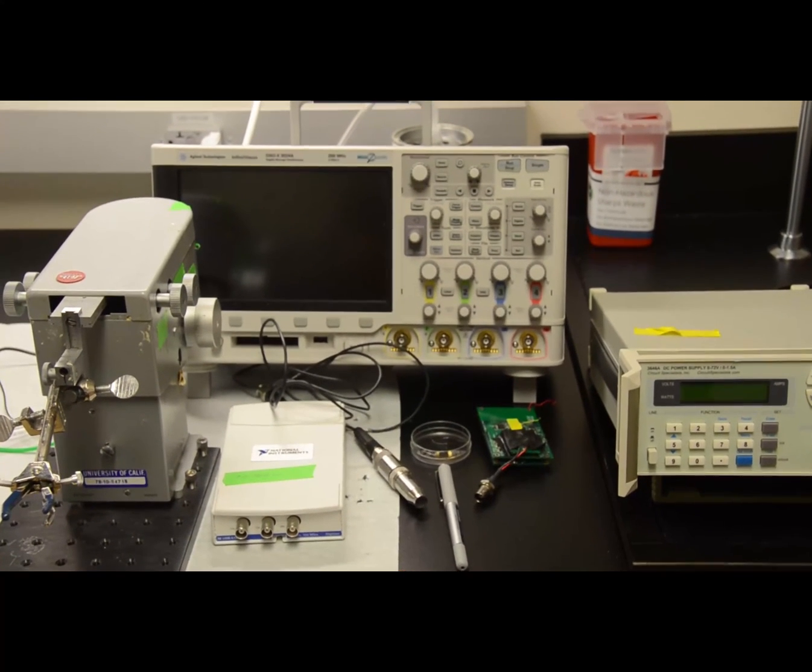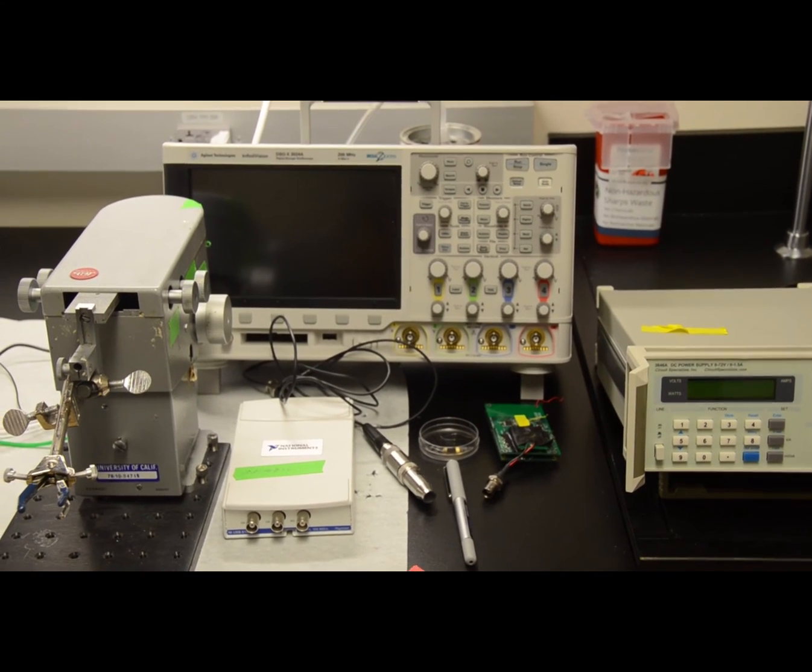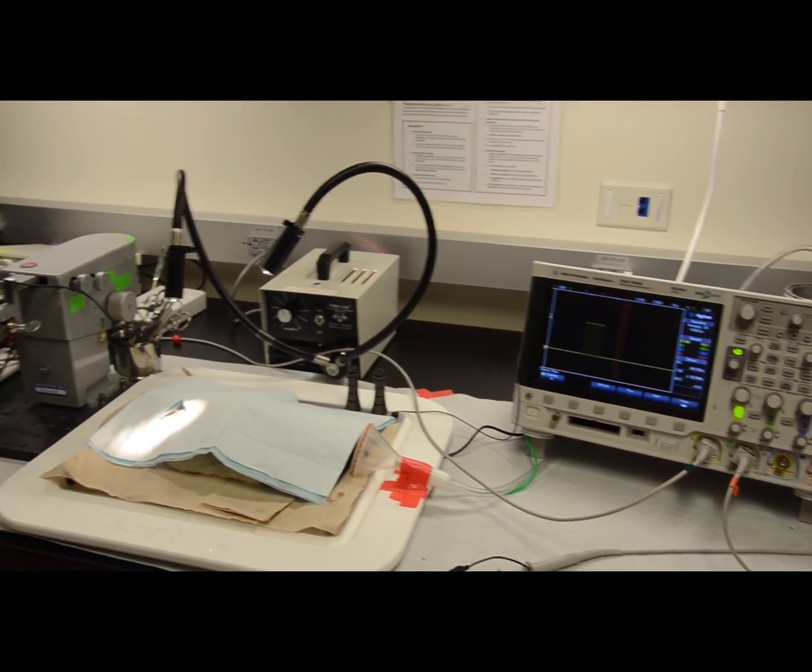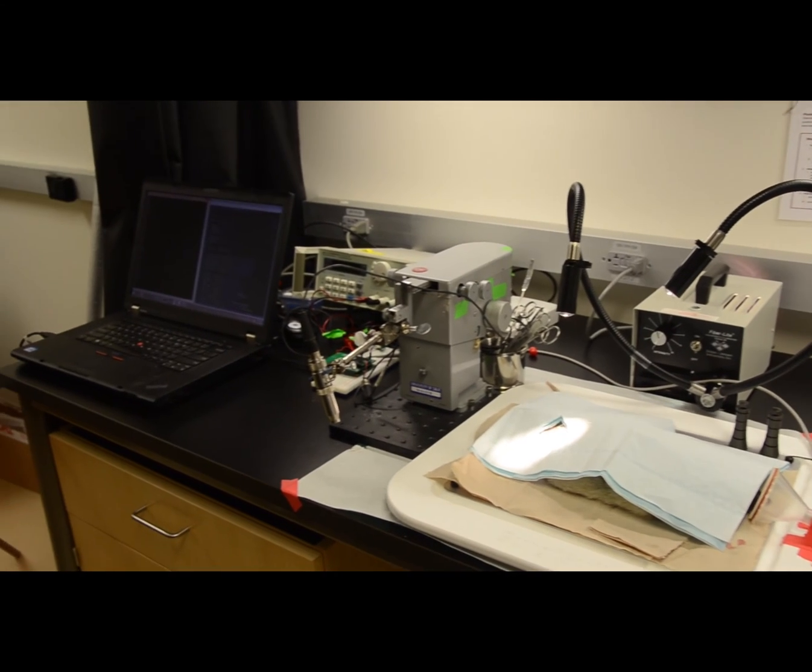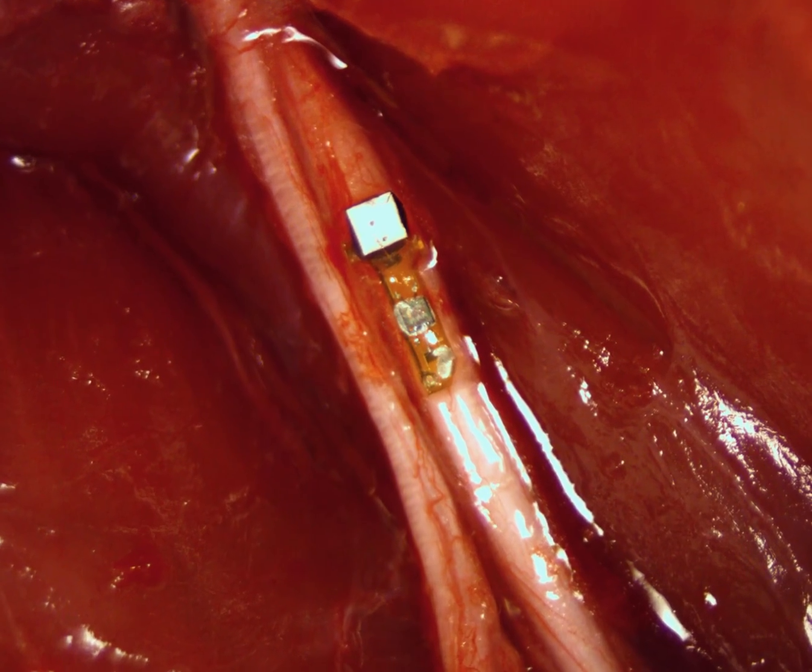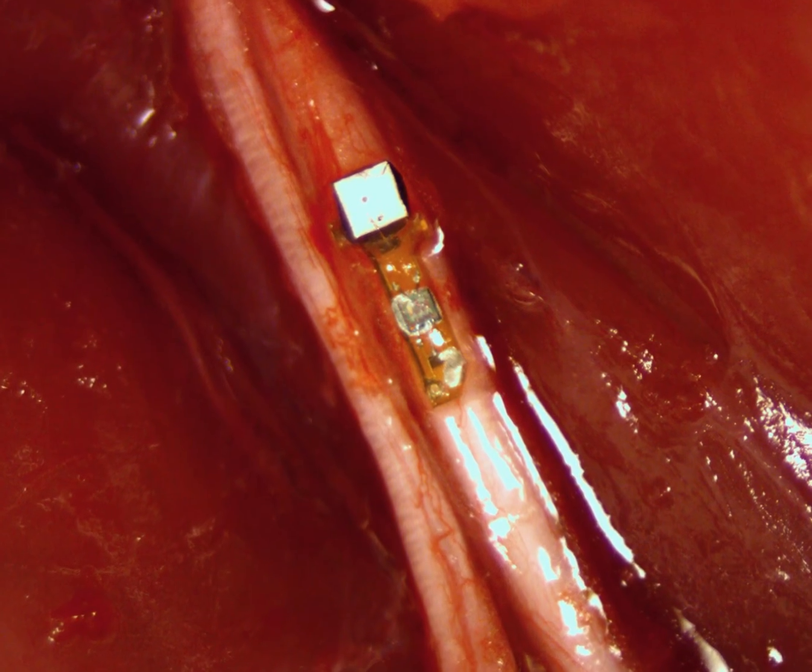The entire in vivo measurement can be done on a tabletop. Adult male Long Evans rats are used in all experiments and are anesthetized. The neural dust mote is placed either on the muscle for EMG recording or placed in contact and sutured to the epineurium of the main branch of the sciatic nerve.